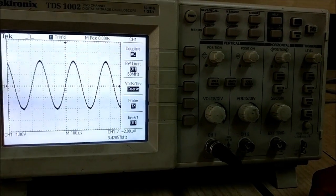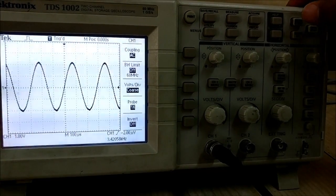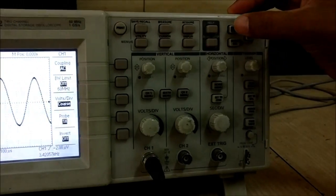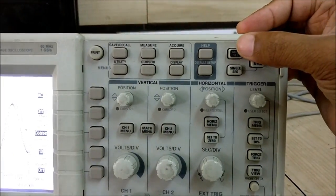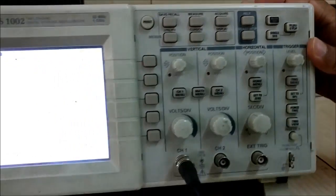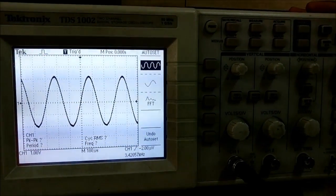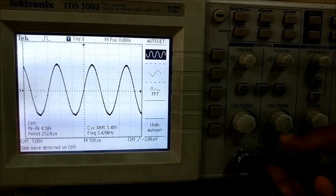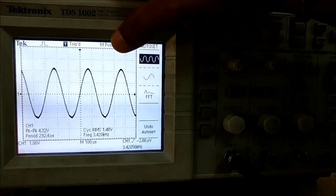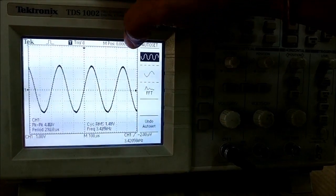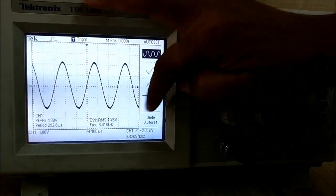If there is no signal coming, we can press auto set, which is given here. If you press it, it will automatically detect the channel signal, whether channel 1 or channel 2, and convert it into a visible signal form according to the default view.